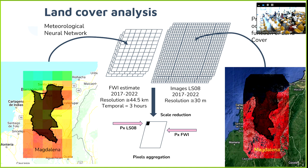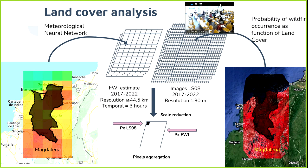We used the probability of wildfire occurrence as a function of land cover, and used this prediction for downscaling.